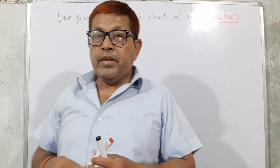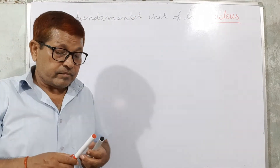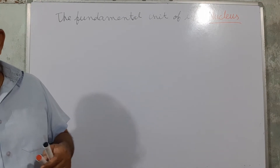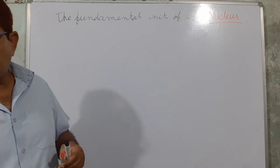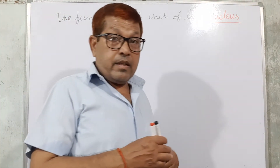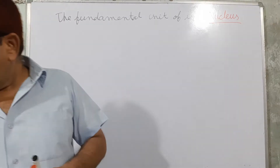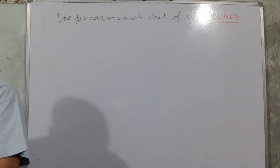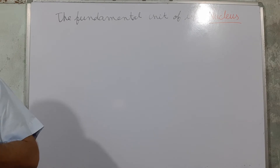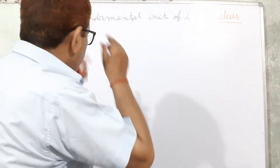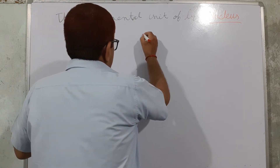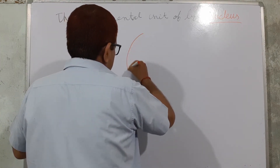Nucleus is an important structure. Nucleus consists of a nuclear membrane. First we have to make a diagram of the nucleus, so the nucleus consists of structures as given here.